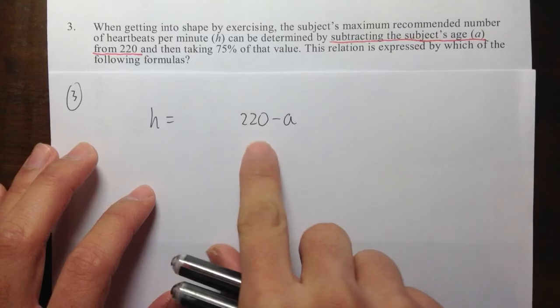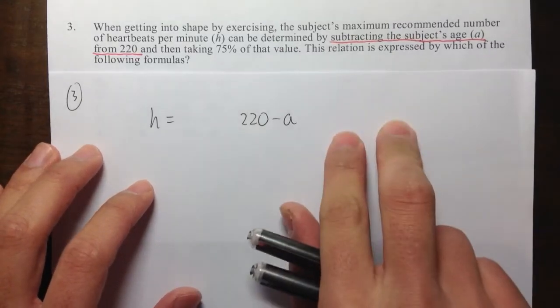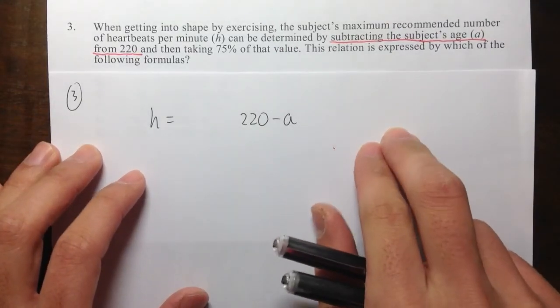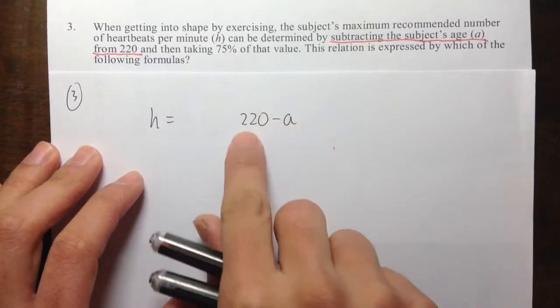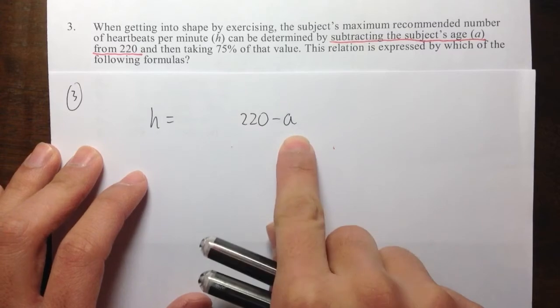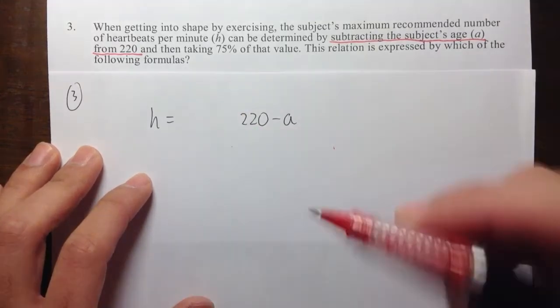And then, whatever this number comes out to be, in our example, it comes out to be 190. And then I need to take 190 times 75%. But it's the result of 220 minus A. We need to do that first. So I need to use a parenthesis.